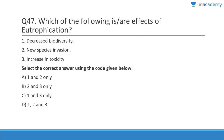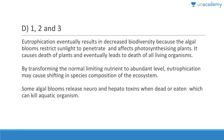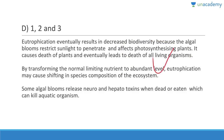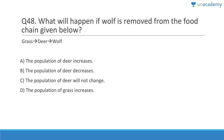Question 47: Effects of eutrophication include decreased biodiversity, new species invasion, and increased toxicity — all of these are effects. Eutrophication results in decreased biodiversity because algal blooms restrict sunlight penetration, causing death of plants and living organisms. It shifts the species composition of the ecosystem, and some algae release neuro- and hepatotoxins that can kill aquatic organisms.